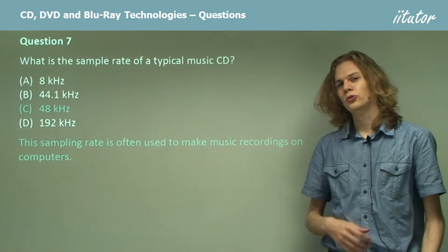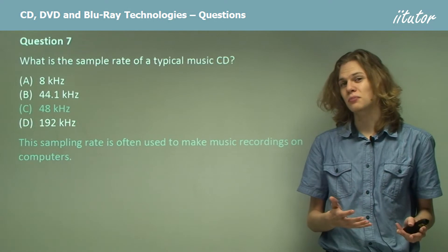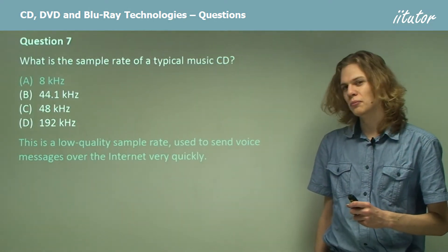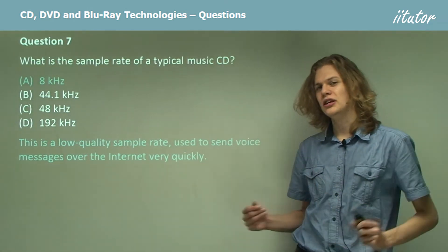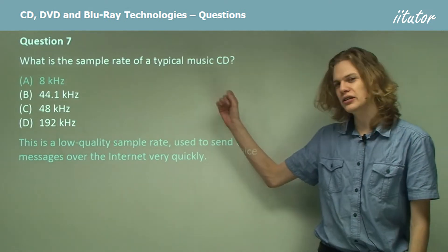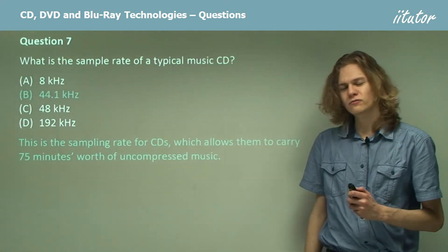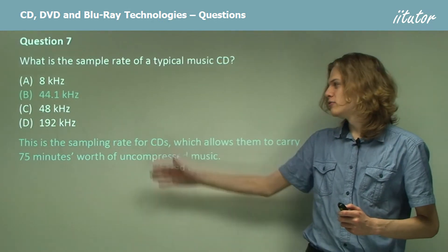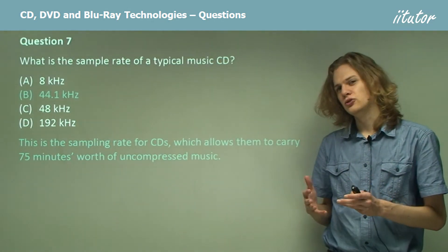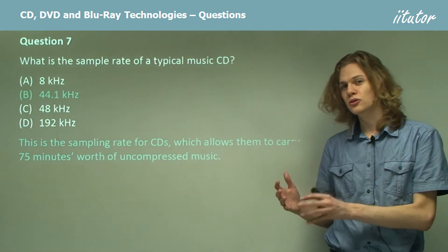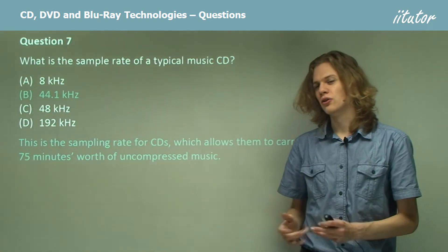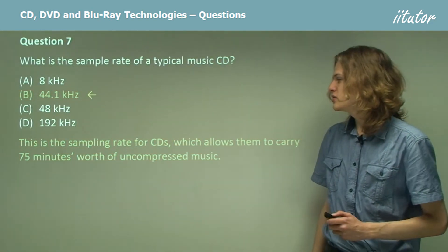CDs were not designed to run on computers — they were designed to run on CD players. 8kHz is a very small sample rate, good for encoding voice or things that need to be sent quickly, but bad for encoding music and not used on CDs. Our last option is B, 44.1kHz. This is lower than 48kHz or 192kHz, but it's high enough quality to accurately represent musical data and low enough that we can store lots of it on a single CD. So B is the correct answer.